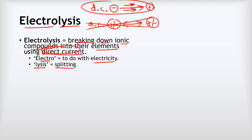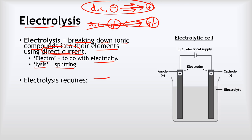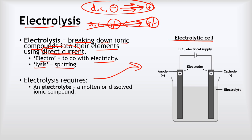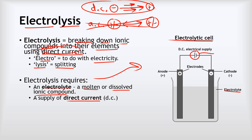How do we do electrolysis — what's the setup? We call this an electrolytic cell. In an electrolytic cell we need a few things. First, we need our electrolyte — that's a molten or dissolved ionic compound, and it must be molten or dissolved so that the ions are free to move so it can conduct electricity. The second thing we need is a supply of direct current, often but not always something as simple as a battery, which strictly speaking we should really refer to as a cell if there's just one of them.